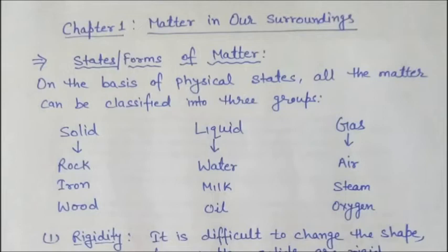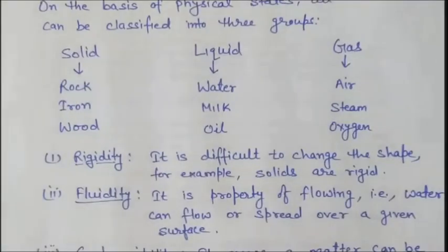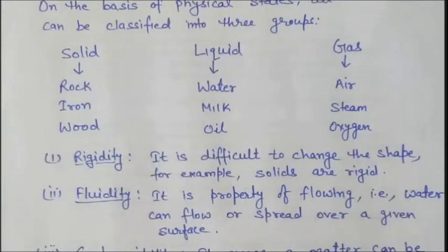These three forms of matter have different properties. Before discussing the properties, we must know some terms. The first is rigidity. Rigidity means it is difficult to change the shape. For example, solids are rigid because the particles in solids are very closely packed and there are very strong forces of attraction between the particles of solids. Liquids and gases are not so rigid because their particles have less force of attraction than solids.